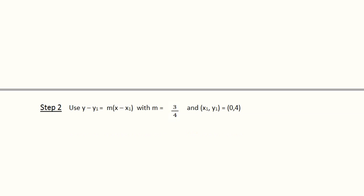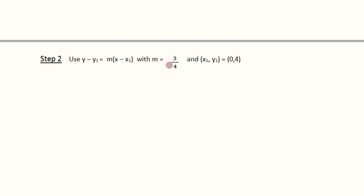The second step in the process is to take that slope that we just found and the given point (0,4) that they gave us, and plug that into this form of the line: y minus y1 equals m times x minus x1. Plugging in, y1 is 4, m is 3 fourths, and x1 is 0.